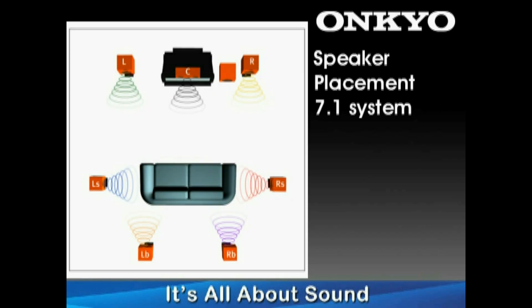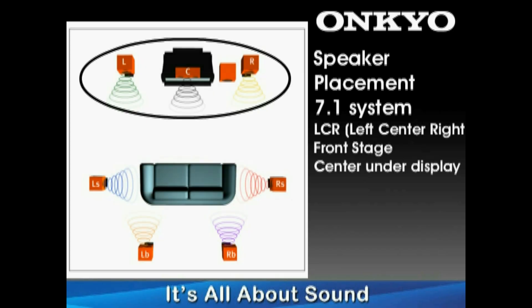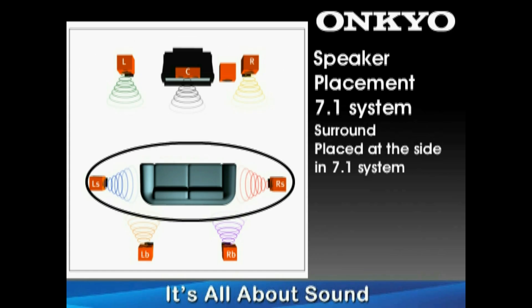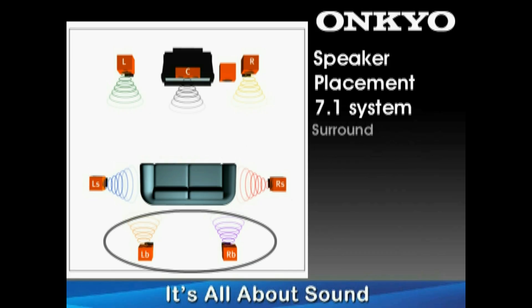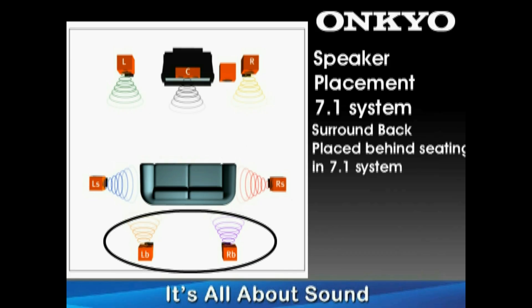In a 7.1 system, the LCR stage — or left-center-right — should be on the same wall as your display device, with the center channel located directly above or below it. The surround speakers should be to either side of the main seating position, while the surround back should be behind the viewing position.